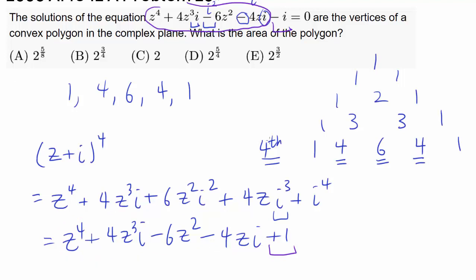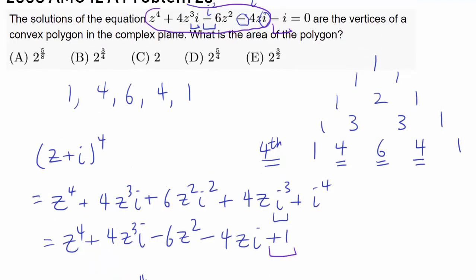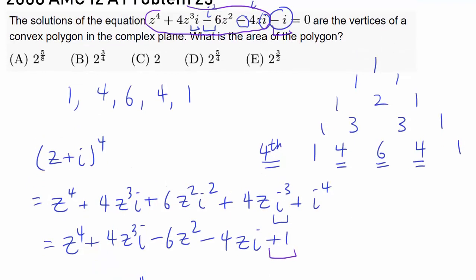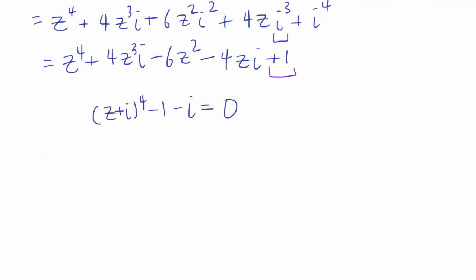So we know our equation can be written as (z + i) to the fourth, except that we take away 1 and also take away i, giving us the equation (z + i) to the fourth equals 1 plus i.